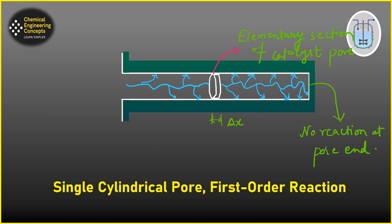We have supposed a single cylindrical pore of length L. This is the axial direction x in which the reactant will move inside the pore. Reactant A is diffusing into this cylindrical pore and reacting on the surface by a first-order reaction. At the end of the pore there is no reaction happening. This is an elementary section supposed to find out the reaction step and the mass transfer step.